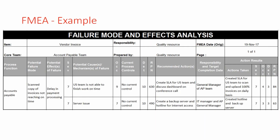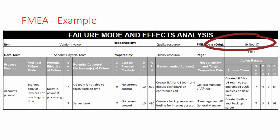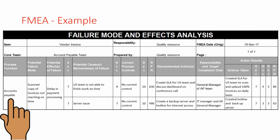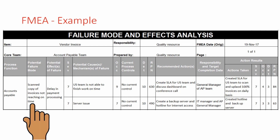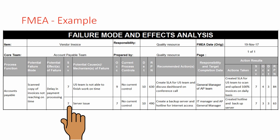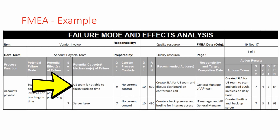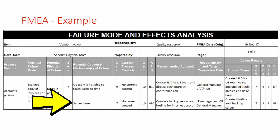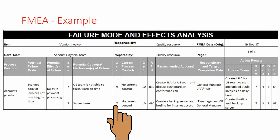Let's understand this with an example. The item is vendor invoice. The core team is the accounts payable team, responsibility belongs to a quality resource, and the FMEA date is 19th November. The process function is accounts payable. The potential failure mode is: scanned copies of invoices not reaching on time. The potential effect of failure is delay in payment processing. A severity score of 7 is given. Two potential causes were identified: first, the US team not finishing work on time while scanning and uploading documents to a server; second, a server issue. The occurrence of the first cause was higher, so a rating of 9 was given. The occurrence of the server issue was lower, so a rating of 7 was given.